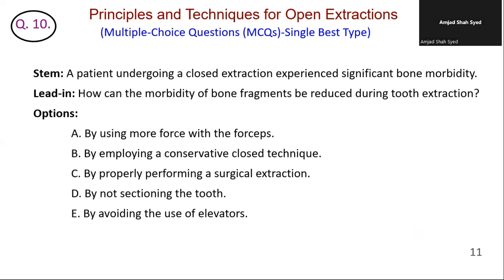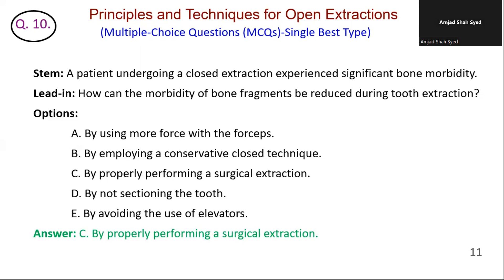A patient undergoing closed extraction experienced significant bone morbidity. How can the morbidity of bone fragments be reduced during extraction? Option A is incorrect — using more force can increase the risk of bone morbidity. Option B: conservative closed techniques can result in higher morbidity if not done correctly. Option C is correct — the morbidity from bone fragments can greatly exceed expectations if extraction is not done properly; a surgical extraction can help mitigate this issue. Option D: sectioning the tooth can help minimize bone loss. Option E: elevators are necessary tools in both open and closed extraction. The correct answer is C — a surgical extraction can help mitigate bone morbidity.